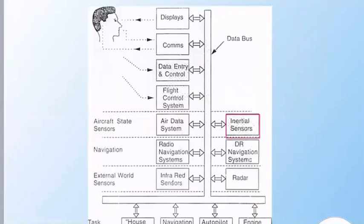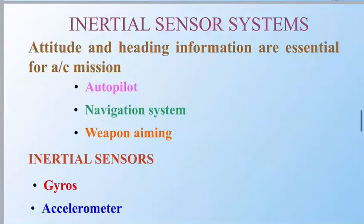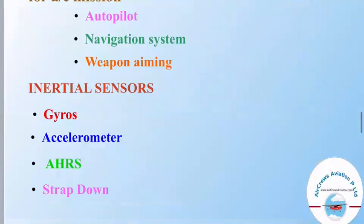Next, we will talk about inertial sensors. Attitude and heading information are essential for aircraft missions including the autopilot system, the navigation system, as well as weapon aiming, which is generally used in military aircraft. Incorporated with these are inertial sensors — that is gyros, accelerometers, HSRS, HRS, as well as strap-down systems.